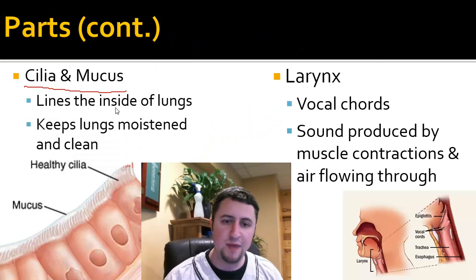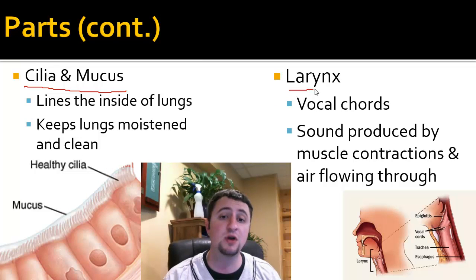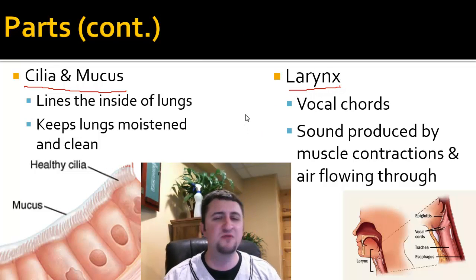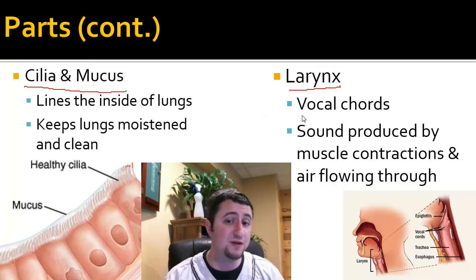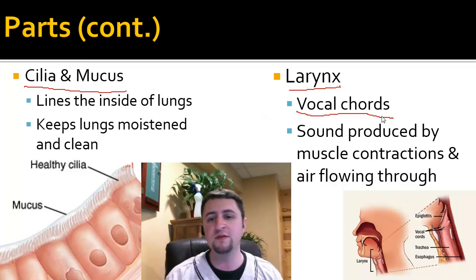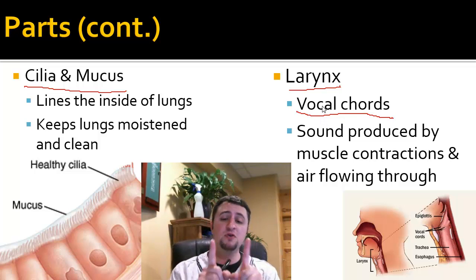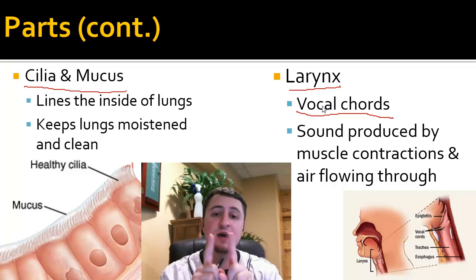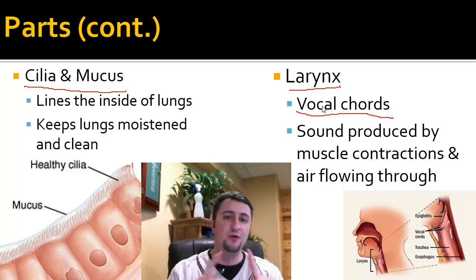Another organ in our respiratory system is called the larynx. You may have heard of the disease called laryngitis — it's when you lose your voice. The larynx is the area where the vocal cords are housed. The vocal cords are like two little flaps on the inside of the larynx, and when they flap together it produces sound.